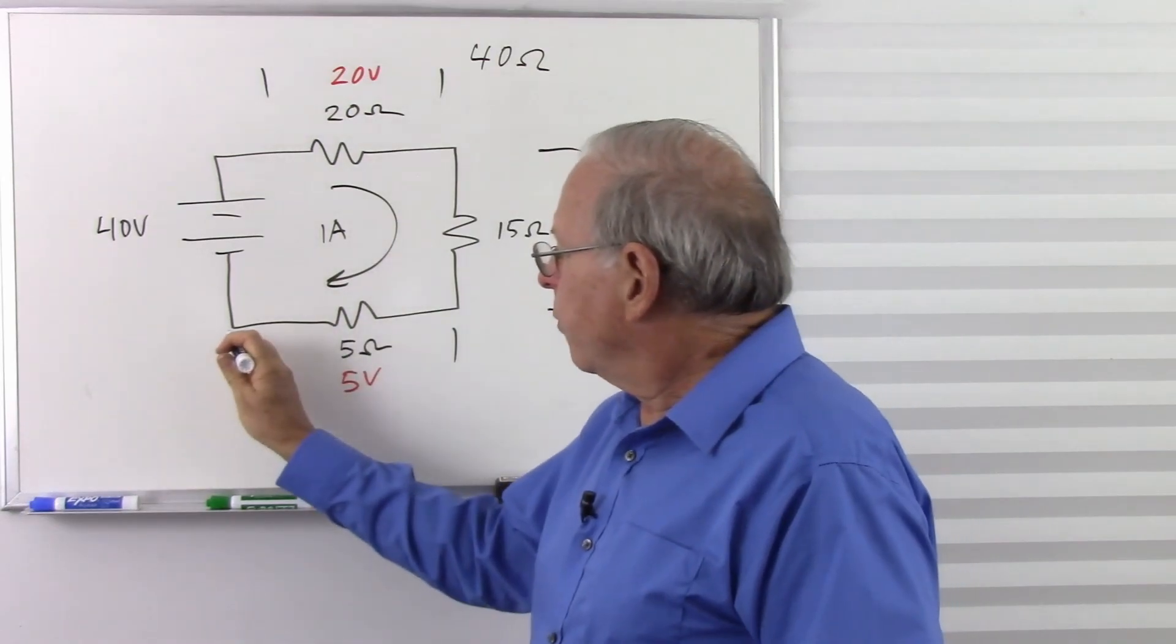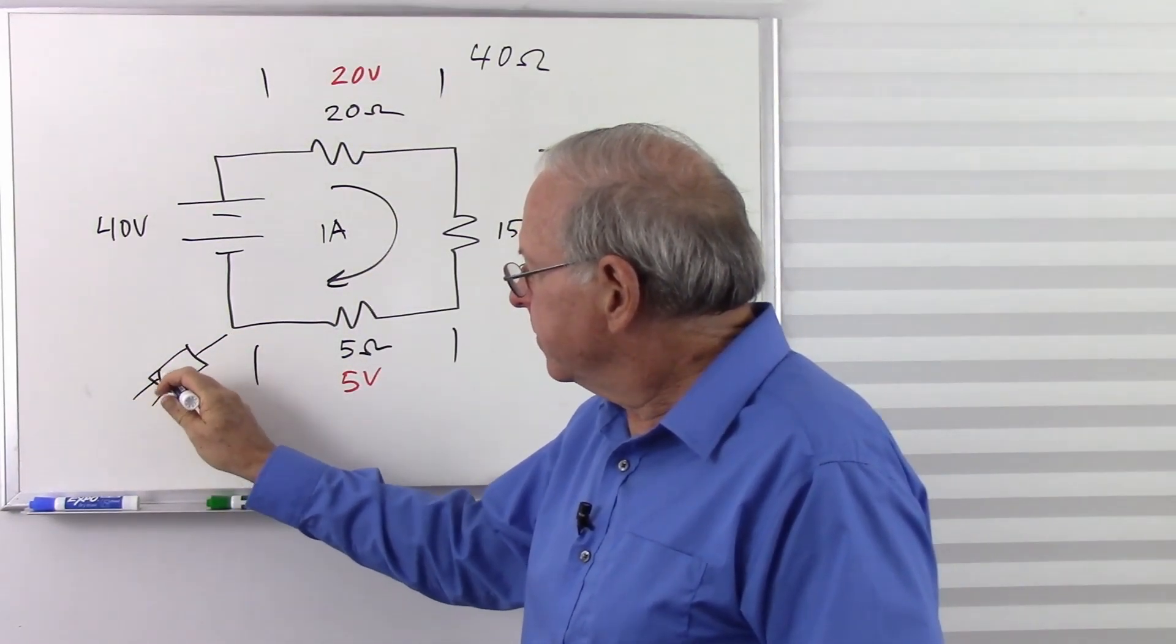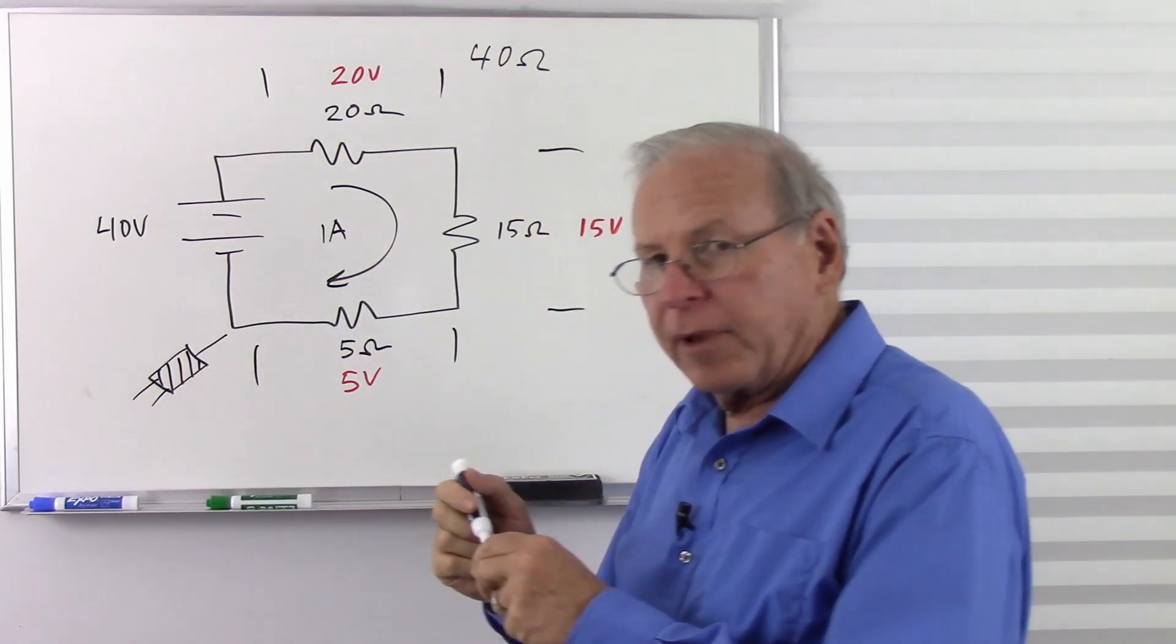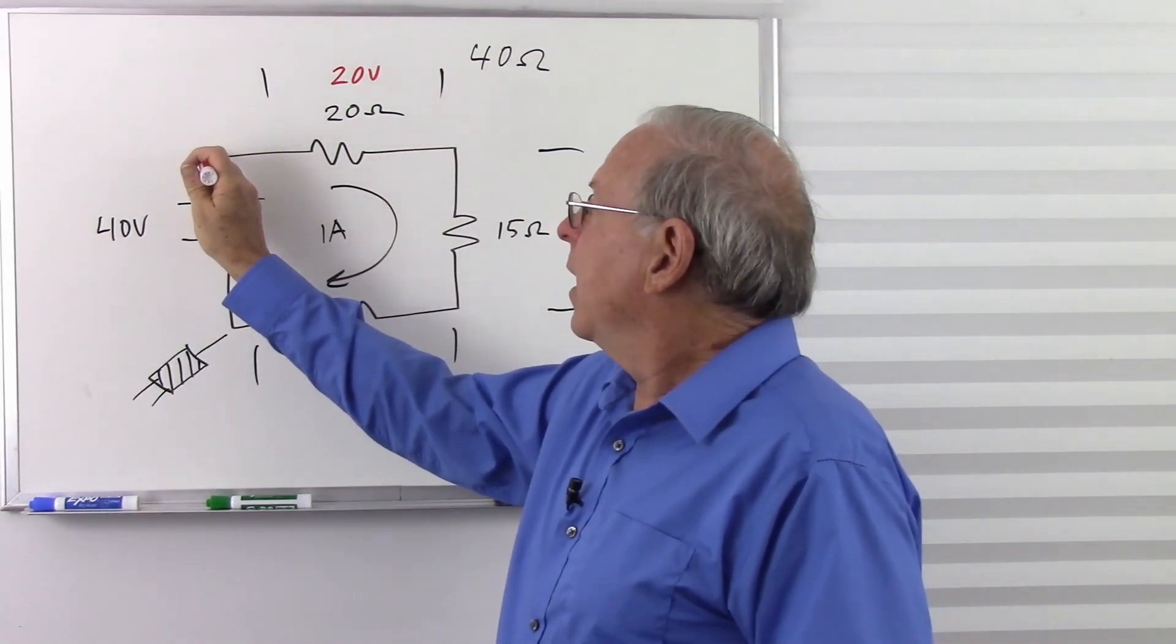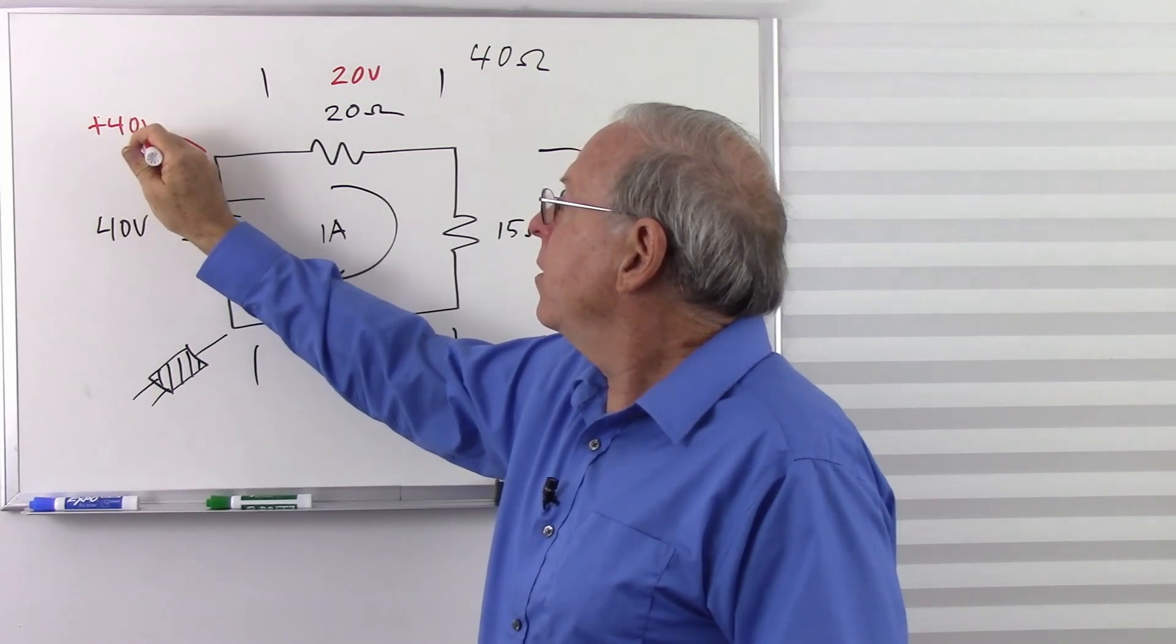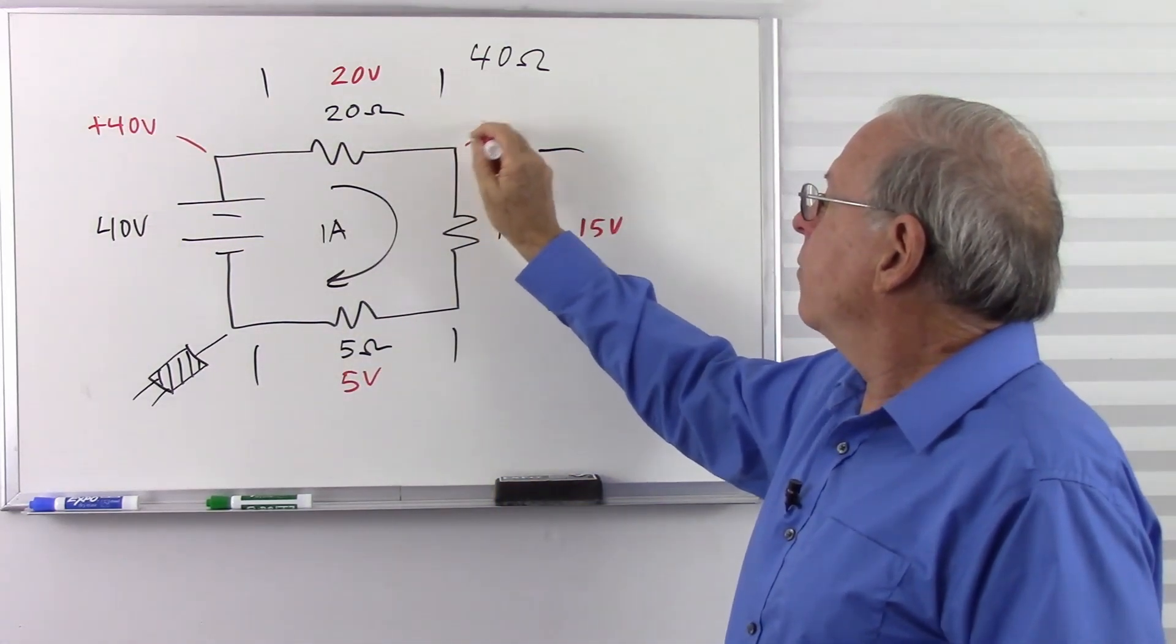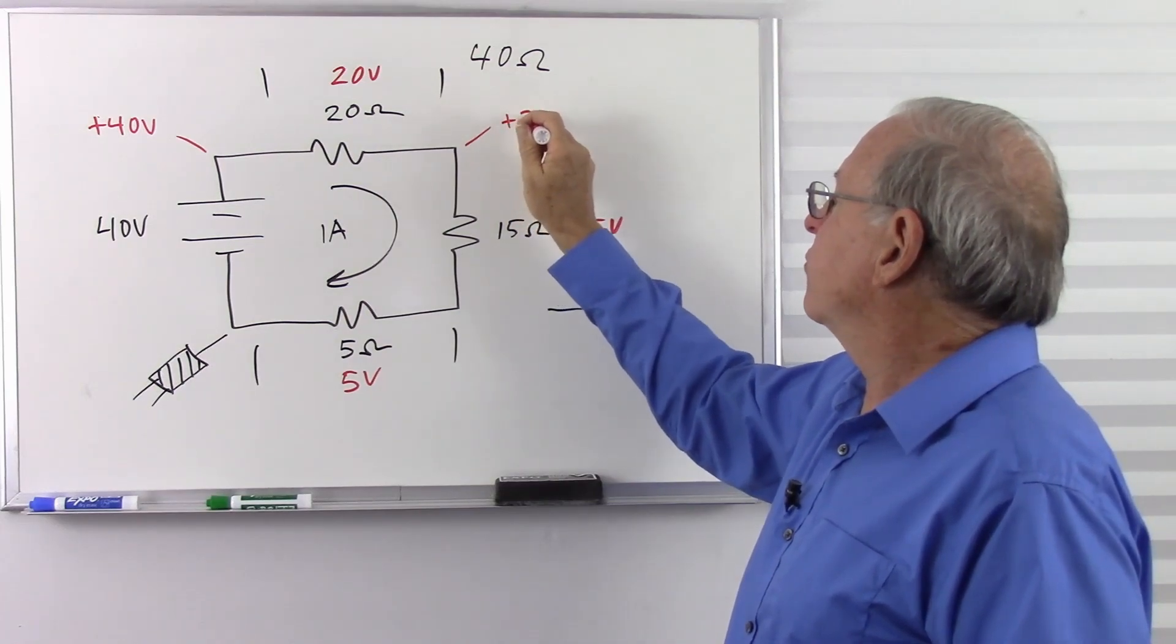So the total voltage across these components equals the source voltage, everything adds up. Let's put a voltmeter here and just look at the voltages around the circuit for a moment. So there's our black lead down at the lowest possible voltage. Now we measure our voltages with our red lead, and we're going to have plus 40 volts here.